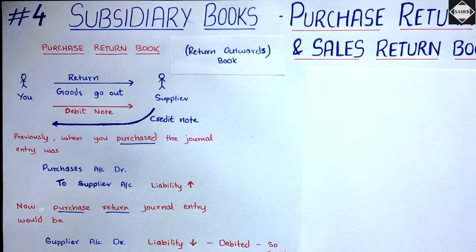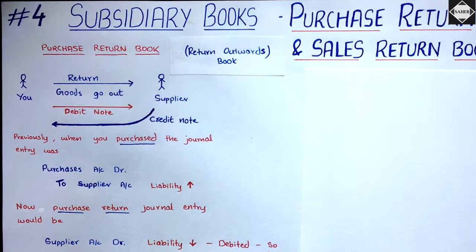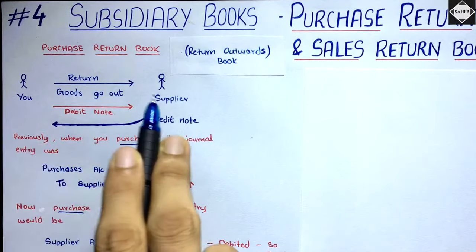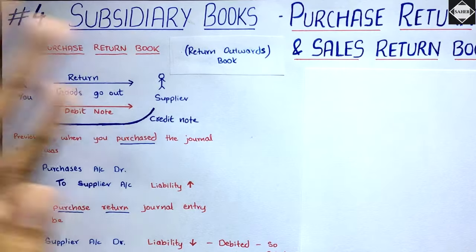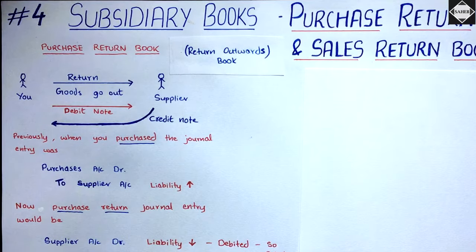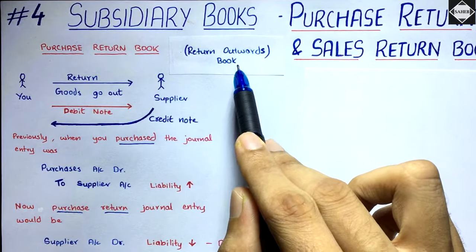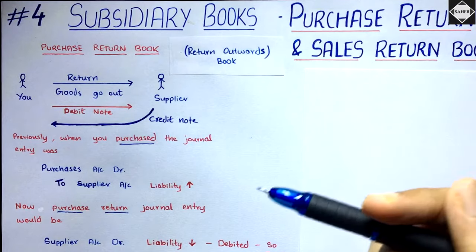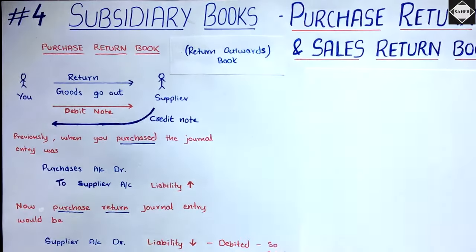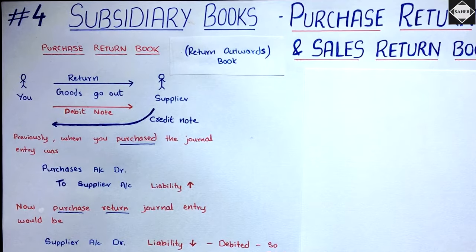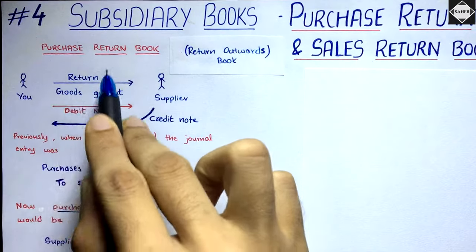Once you receive those 10,000 worth of goods and open the box, you find that 2,000 worth of goods were damaged, so you decide to return them back to your supplier Chandu. This activity of returning goods you purchased is called purchase return, also known as return outwards — because from your point of view, the goods are going out of the business back to Chandu.